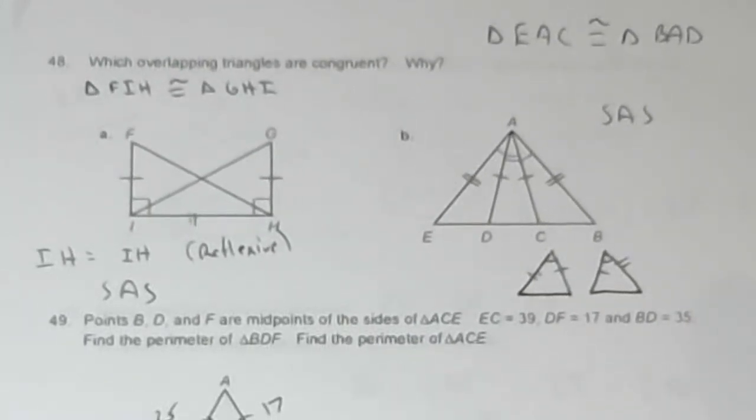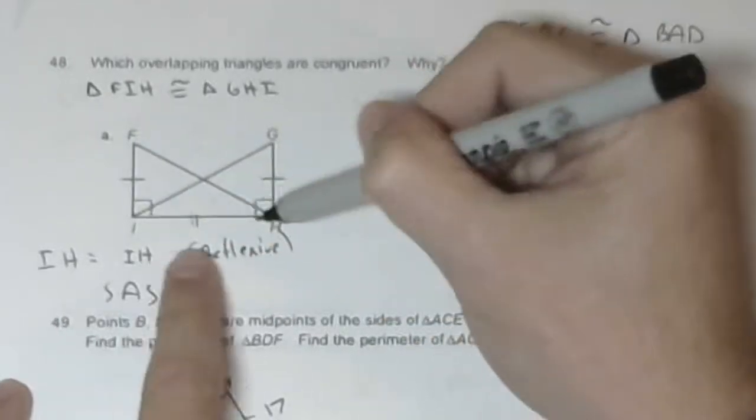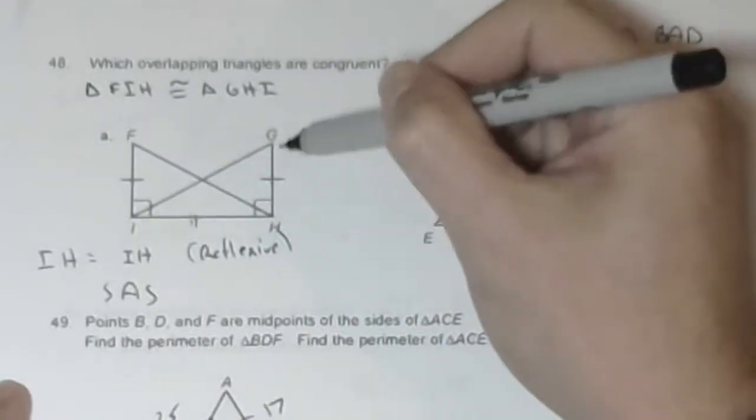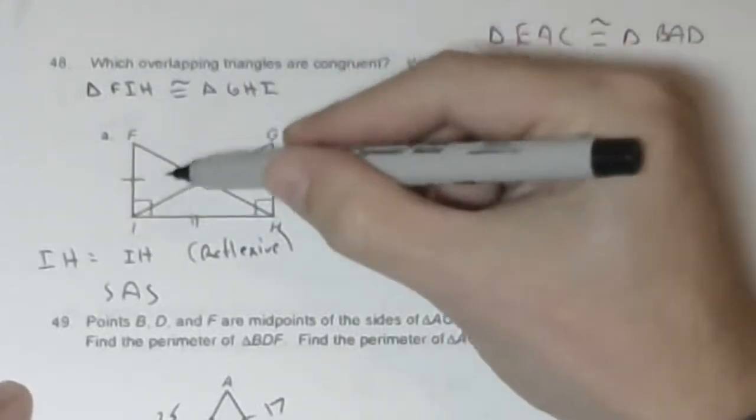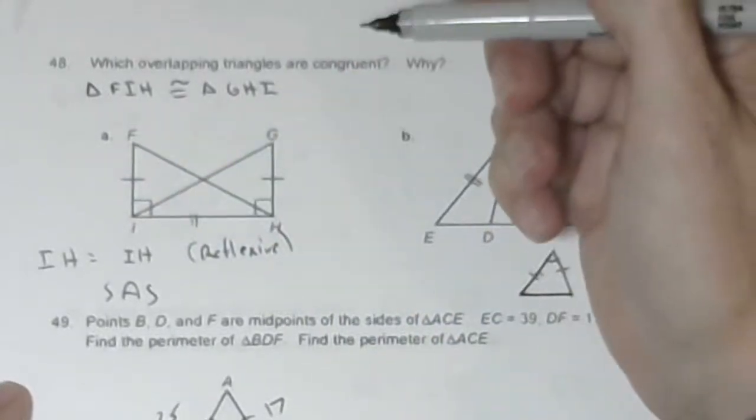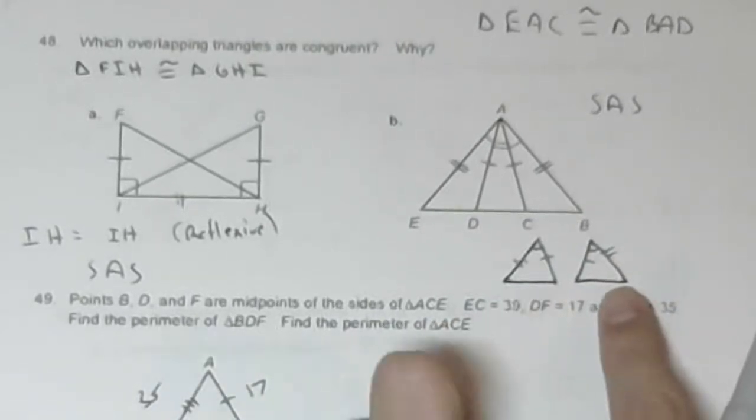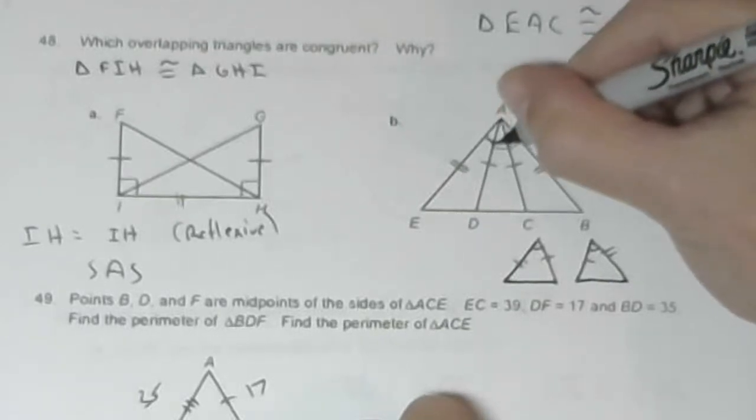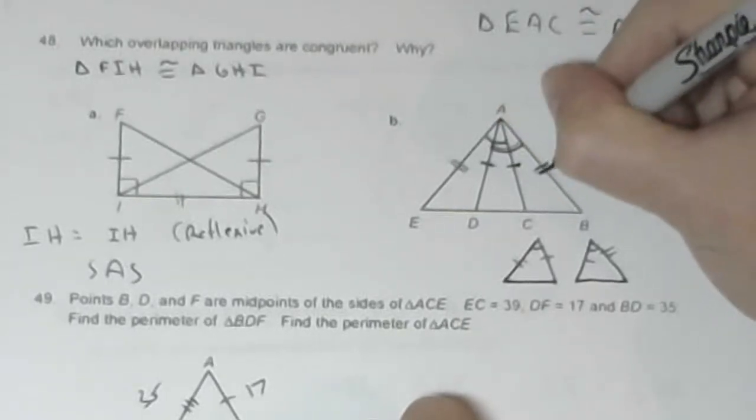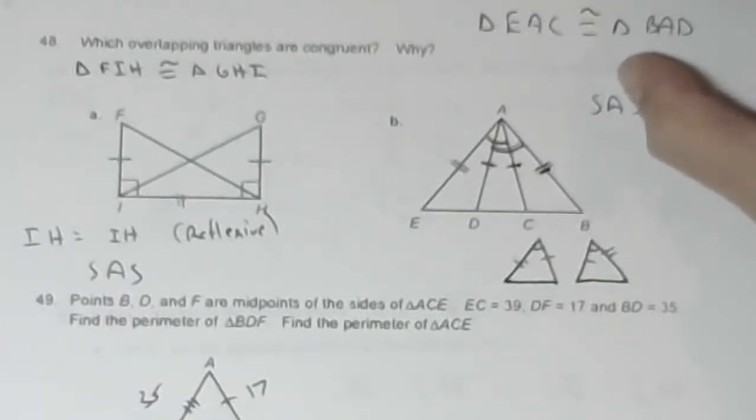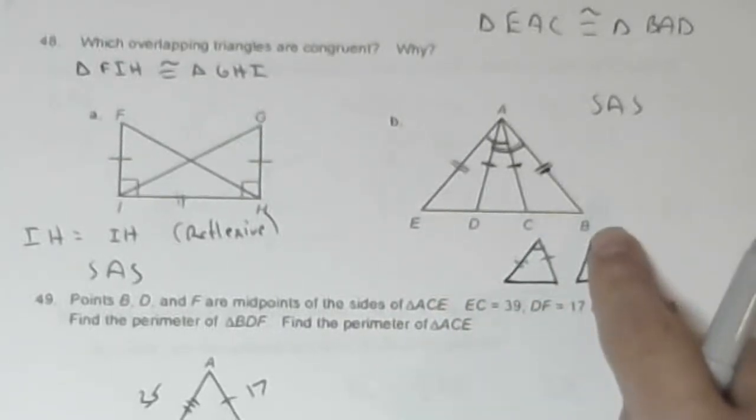Problem 48. Which overlapping triangles are congruent and why? For A, FIH is congruent to GIH. IH is equal to itself by reflexive. FI is equal to GH which is given. Angle FIH and angle GHI are right angles. So what I have is side angle side. For B, these are overlapping, but if I separate them, I have side angle side for both. So they're both side angle side. But do have to name the triangles. Triangle EAC is congruent to triangle BAD.